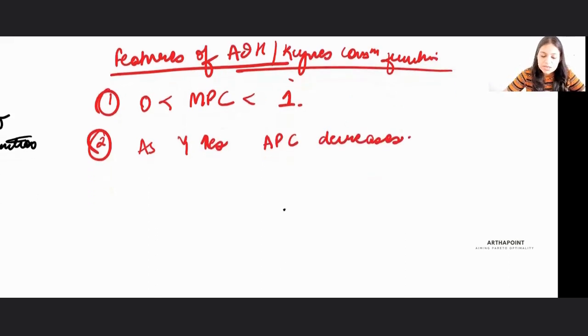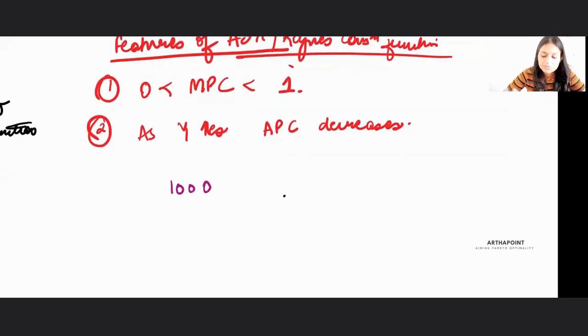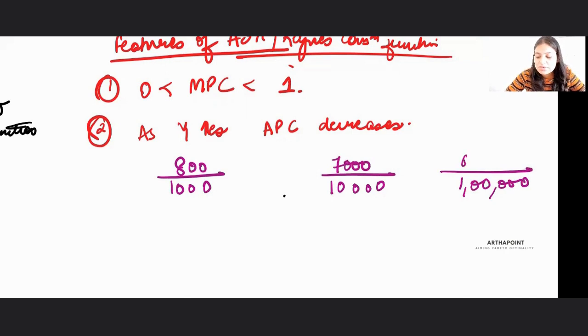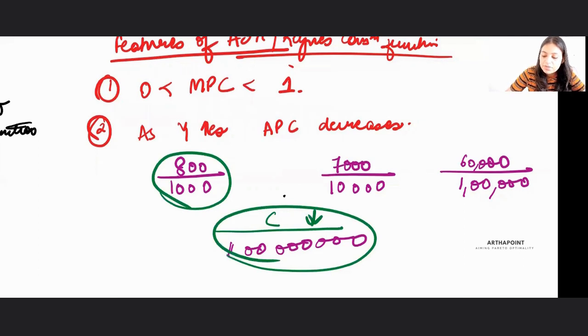Now think about this. Supposedly my income is 1,000 and out of 1,000, I will consume 800. Now when my income becomes 10,000, I consume 7,000. When my income increases to 1,000,000, how much can I consume? Maybe 60,000. When my income keeps on increasing, I cannot keep consuming, right? My savings will keep increasing. My consumption will keep decreasing. So consumption by income decreases as income increases. And this is something which we will see.